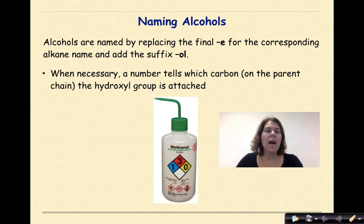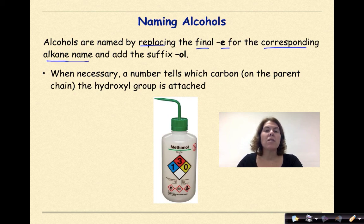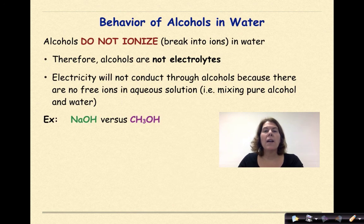Naming alcohols. Alcohols are named by replacing the final E for the corresponding alkane name and adding the suffix -ol. Drop the E, add an -ol. Could we do this with alkenes and alkynes? Yes, we could, but for the sake of this course, we're going to focus on alkanes. When necessary, a number tells which carbon on the parent chain the hydroxyl group is attached. Before we go into examples, let's remind ourselves of the behavior of alcohols in water.